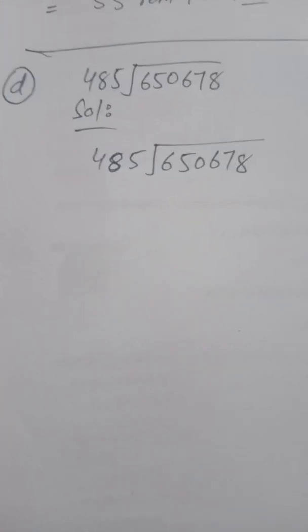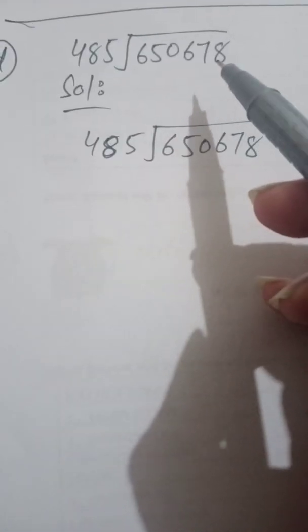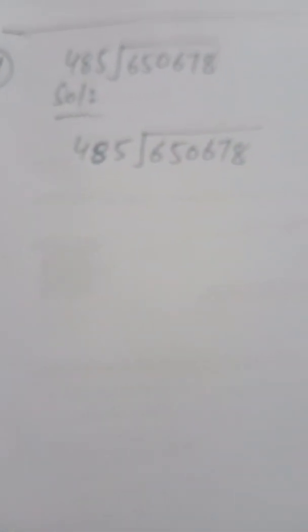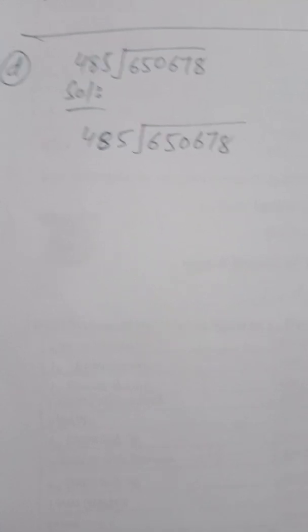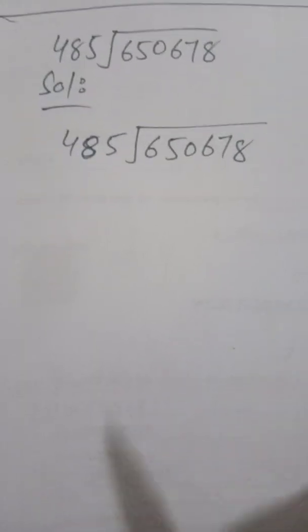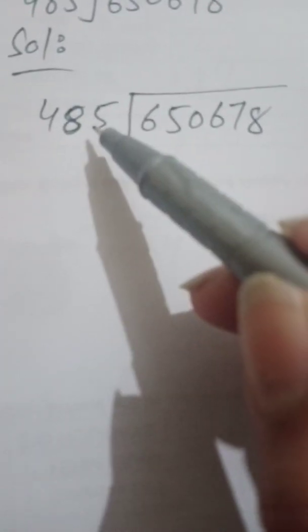Now we will solve part D: 650,678 divided by 485. The divisor is 485 and the dividend is 650,678. Since we have three digits in the divisor, we take three digits from the dividend: 650.